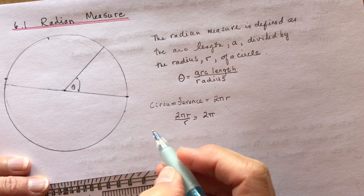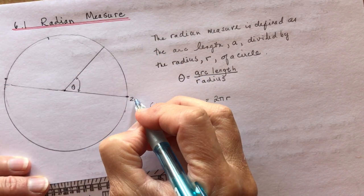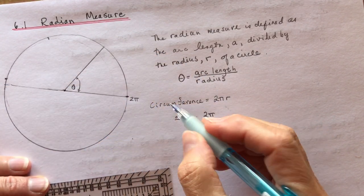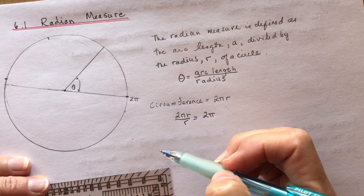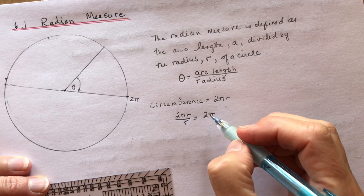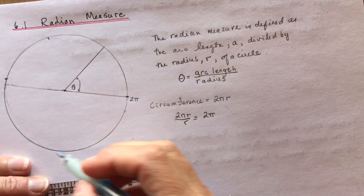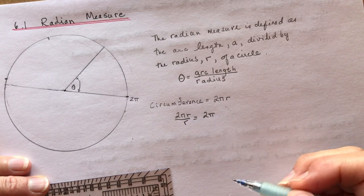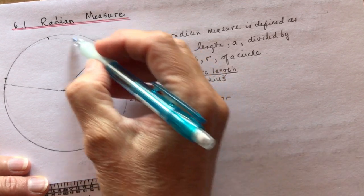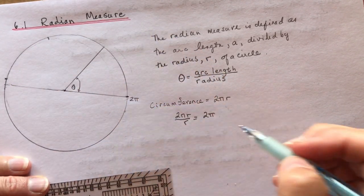So that means all the way around the circle would be 2π radians. You don't have to write the radians, you just say 2π and it's assumed that it's radians. How many degrees is it if you spin all the way around once?